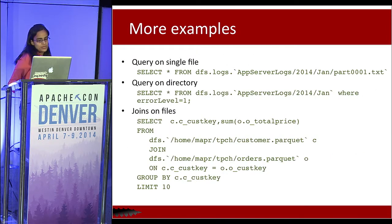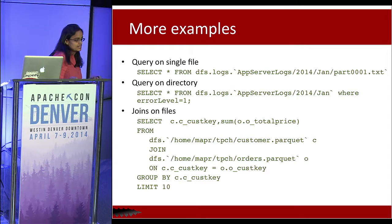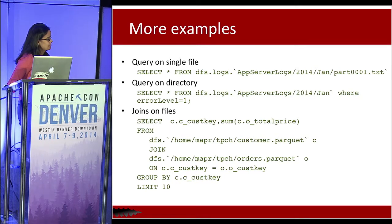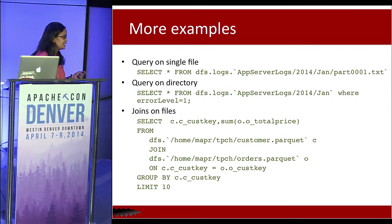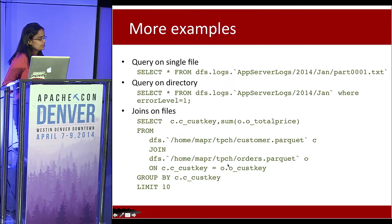You can query a single file or an entire directory. In Hadoop, data is always partitioned across a bunch of files in a directory, so you need directory-level operations. For example, you can say give me all the errors that occurred in January — that might go over 30 days of log files, one per day — and do SQL processing on that data just as you would on tables.